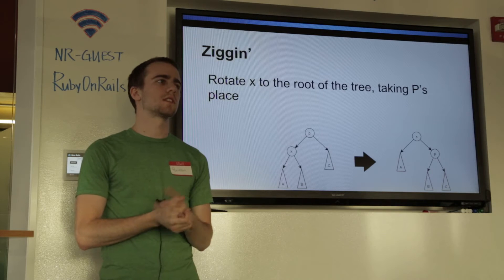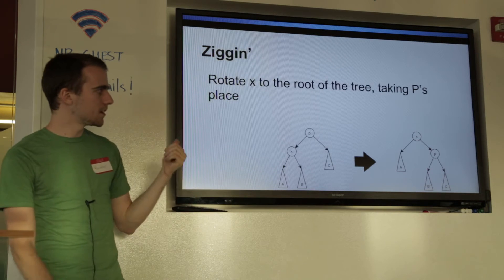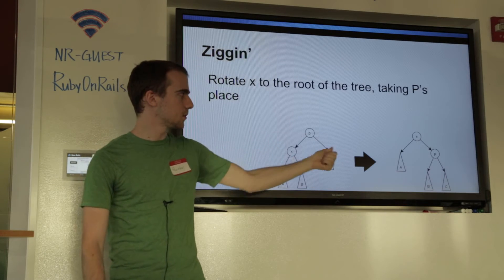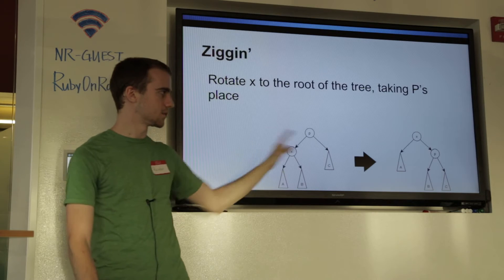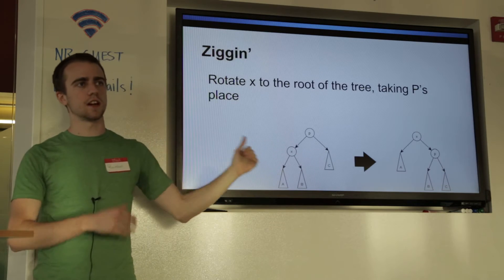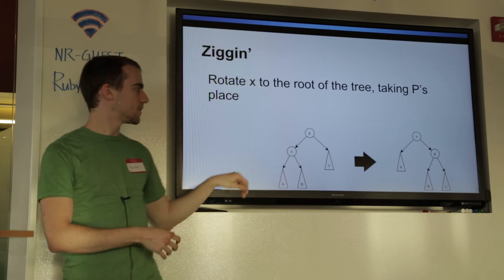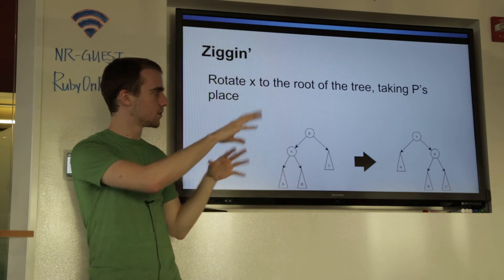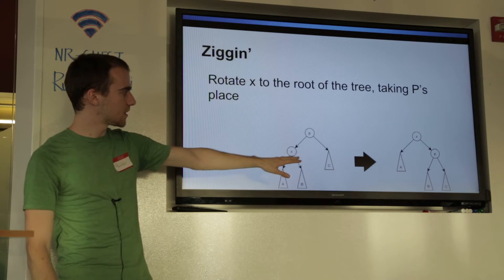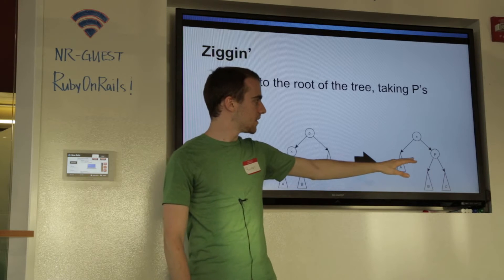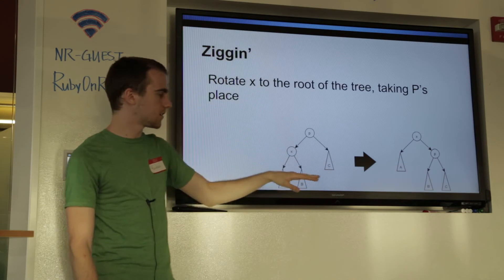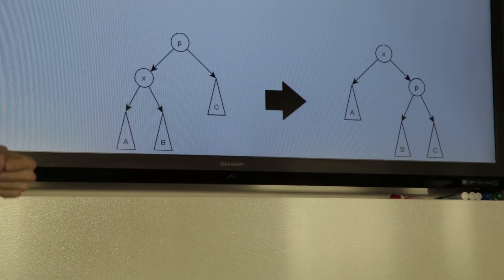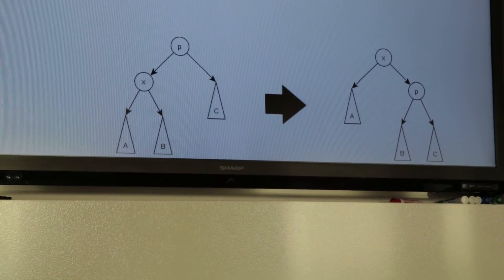The first operation is called a zig. A zig is a special case where x is either the left or the right child of the root node, and you also have an odd number of child nodes. In this case you just rotate — it's about a half-rotate — and it'll get to the top. You can see we start out with x, splay to the root, and everything is still in order. You can still traverse this and get A, X, B, P, C — it'll still be in order no matter what. You're just yanking the tree around.